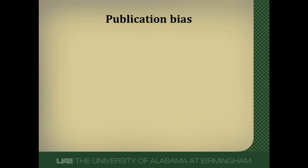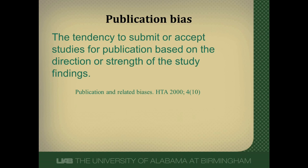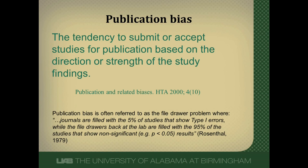So what is publication bias? It's really the tendency to submit or accept a study depending on the study's results. Largely what it means is that positive studies tend to get published more than negative studies. Some people call this the file drawer problem, where studies that are negative or not as strong as the researchers would like never get submitted for publication — they're stuck in a file drawer, never to see the light of day.